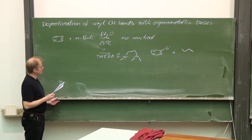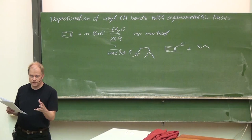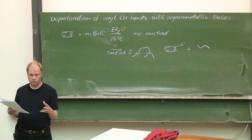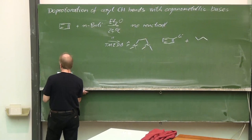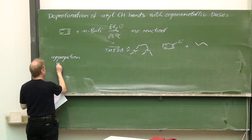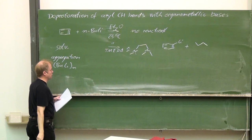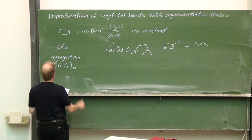Adding TMEDA indeed makes a difference. It changes the structure of butyllithium aggregates and at the same time modifies its reactivity. The aggregation of butyllithium depends on the solvent and additional reagents.